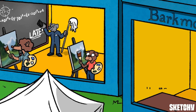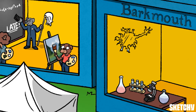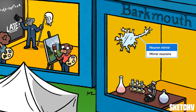Our last stop at Barkmouth is a quick drop into the bio lab to look at some of the biology behind learning. This neuron-shaped mirror represents mirror neurons, a type of brain cell found in the frontal and parietal lobes. Mirror neurons fire when you do a behavior and when you watch someone else do that behavior, so they're believed to be super important for observational learning. Interestingly, they also fire when you feel an emotion or witness someone else feeling emotion, so they might play a big role in empathy too.